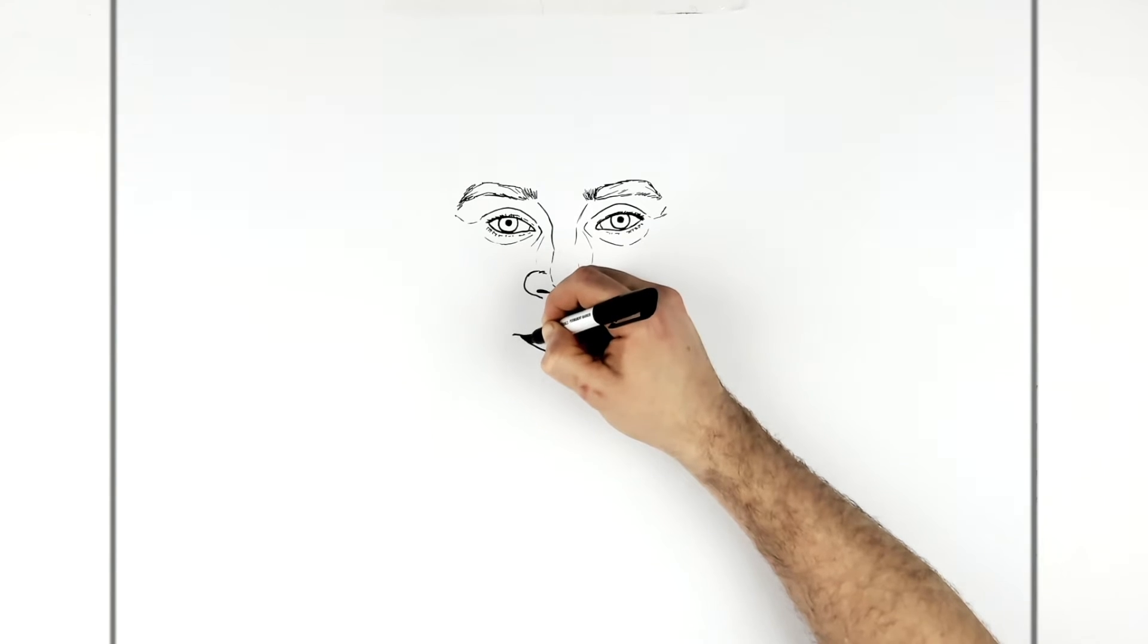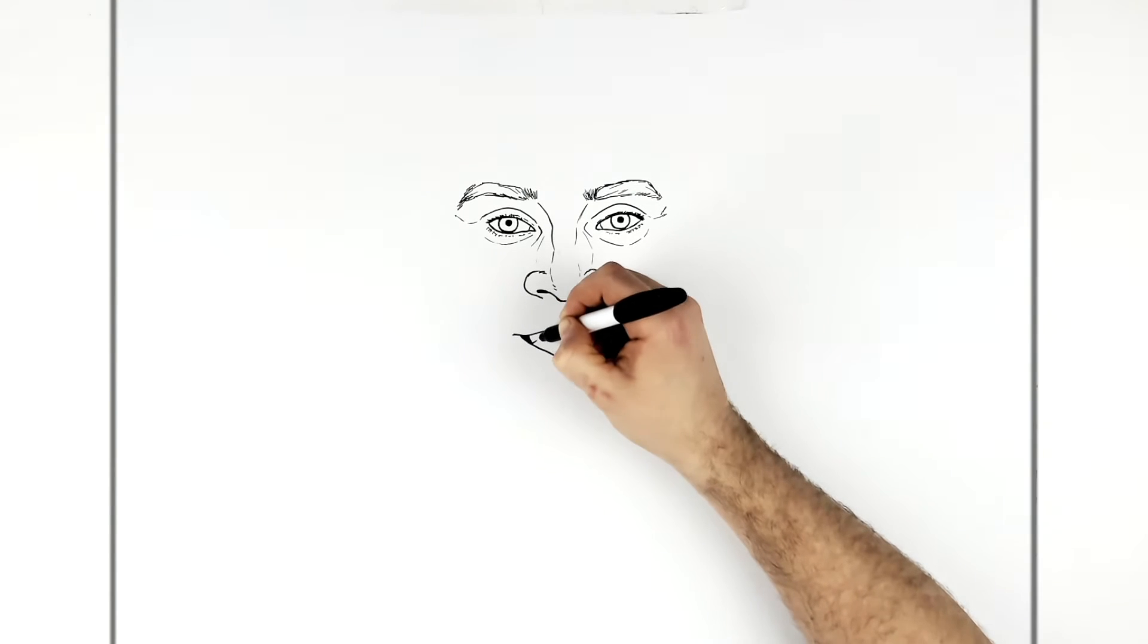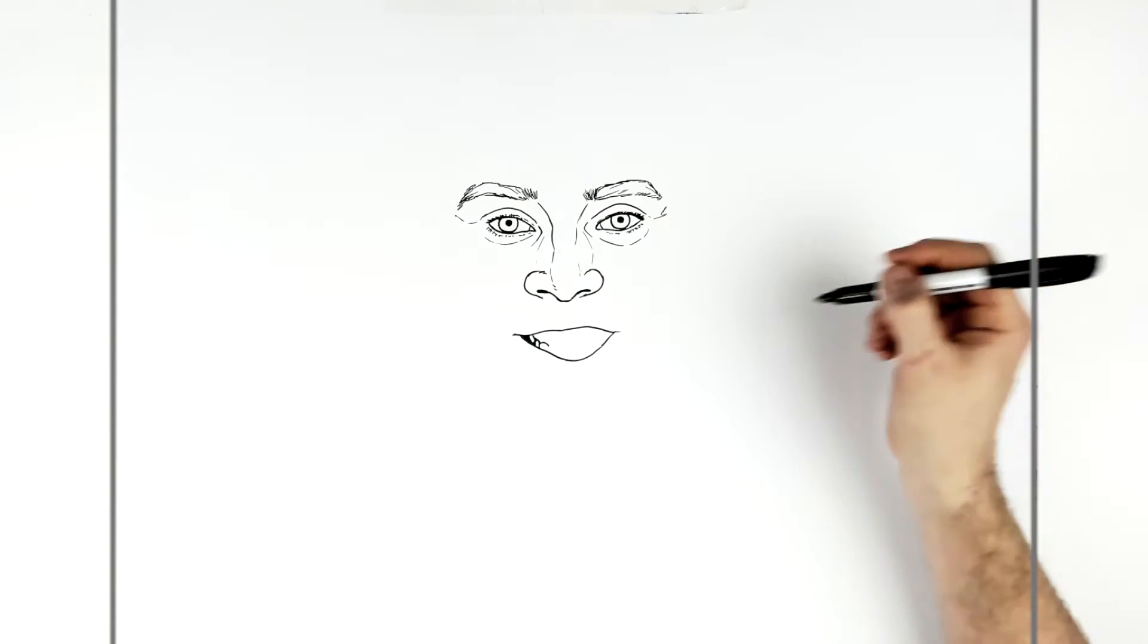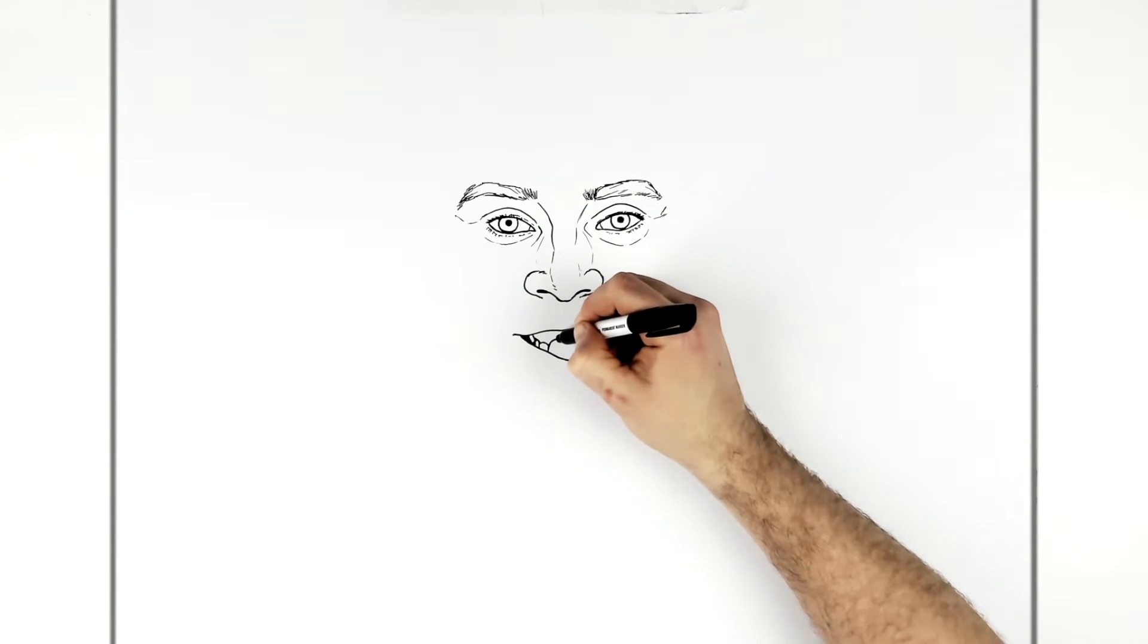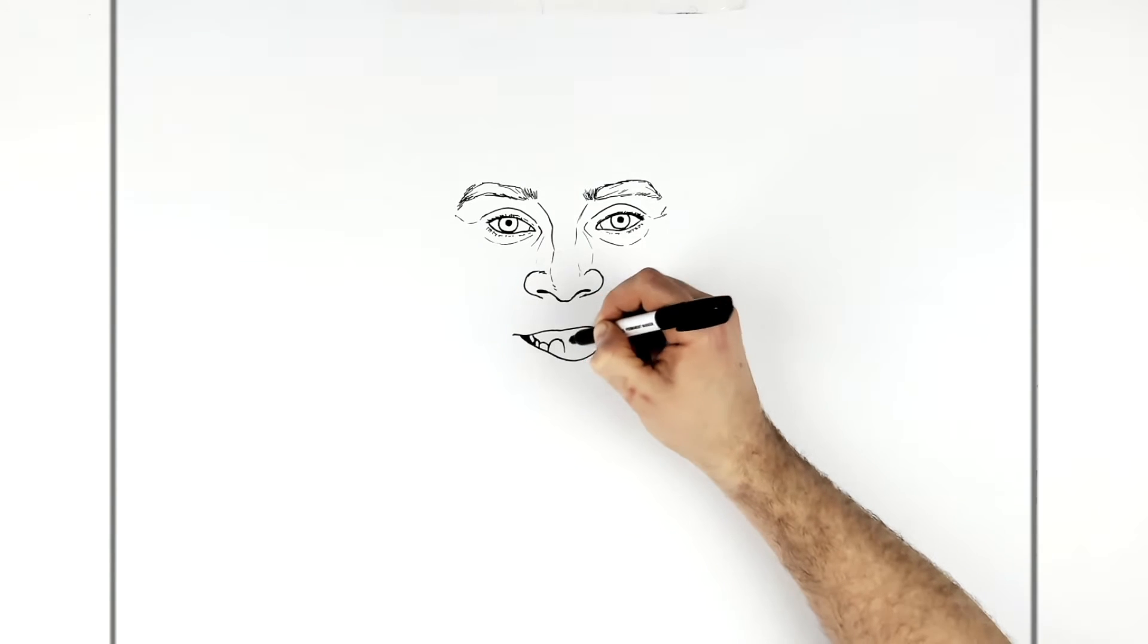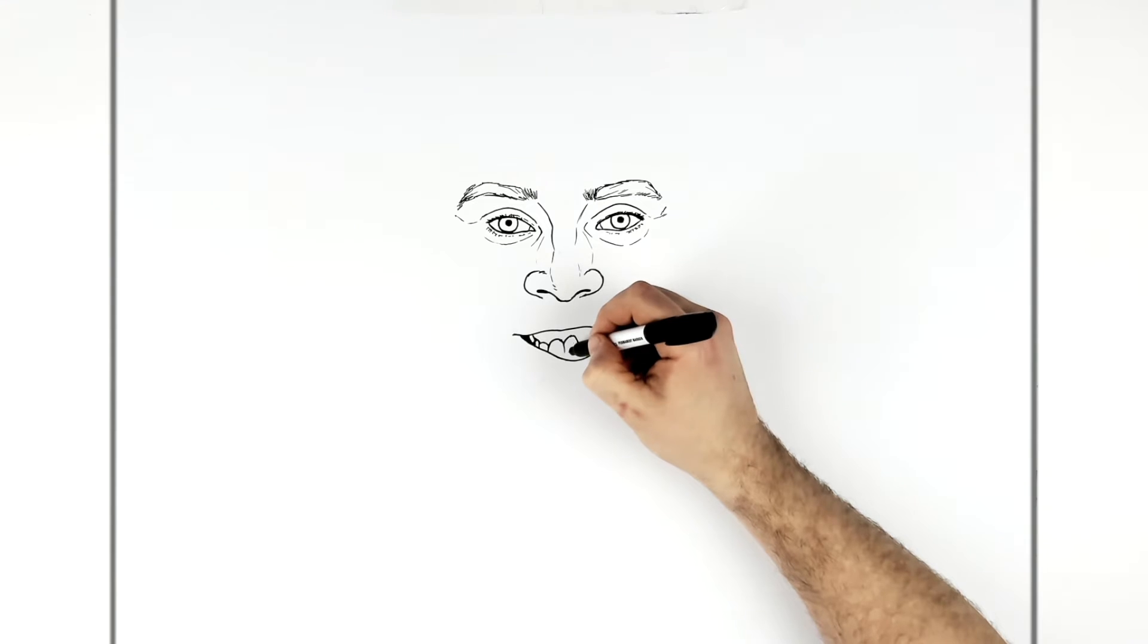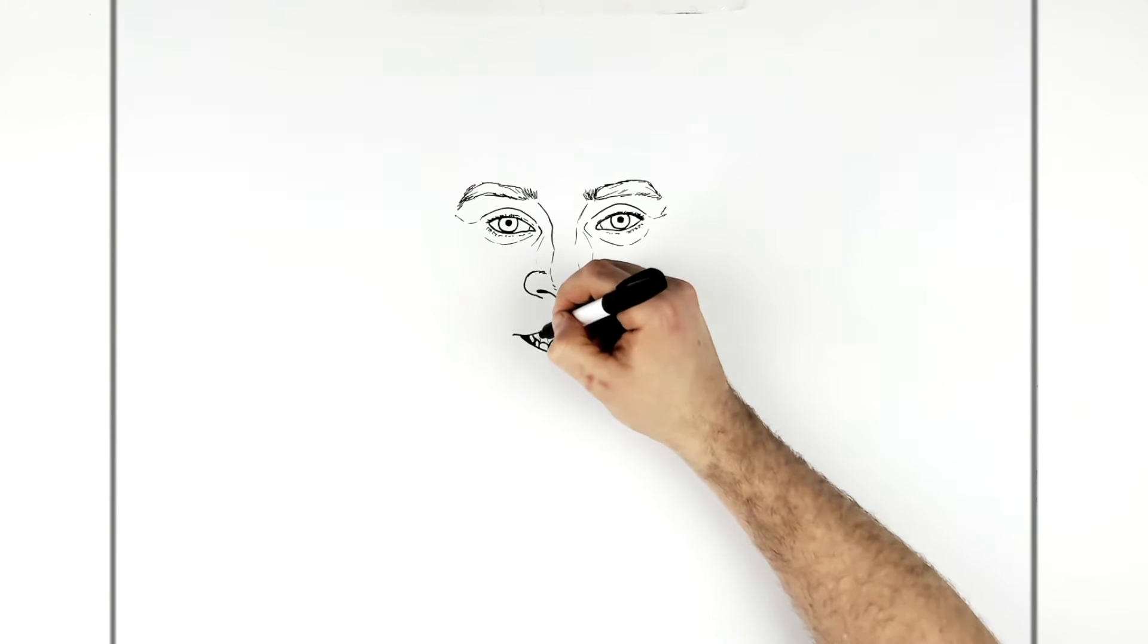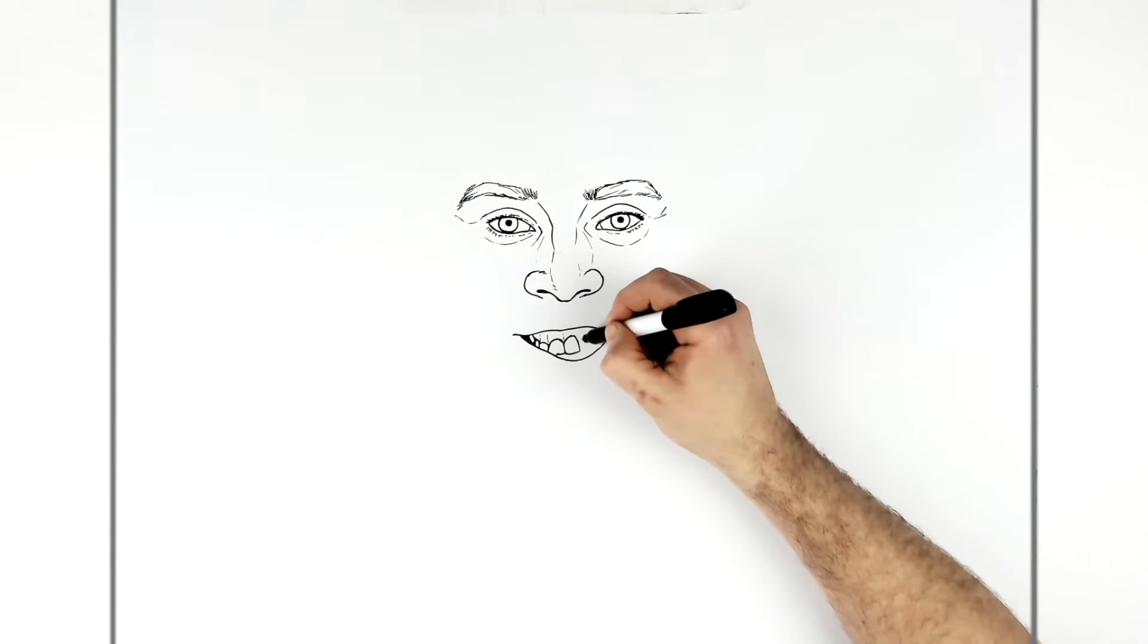And then gum lines in there. So this is all like teeth. And then big teeth in the middle. You can really see his gums now. I think he got his teeth fixed later on.